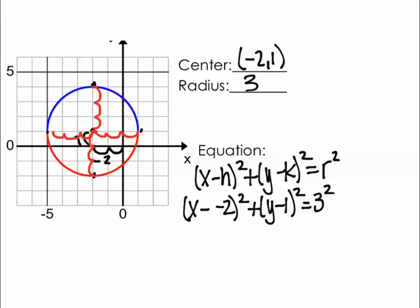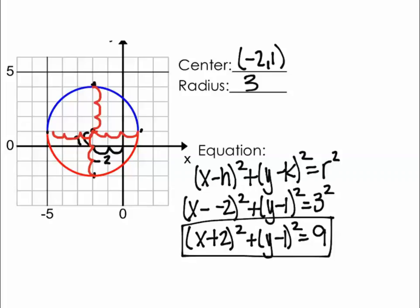Now some of you are going to jump right to this final step where we clean it up, simplify a little bit, make it look all perfect. x plus 2 squared plus y minus 1 squared equals 9. So that right there would be your final answer.